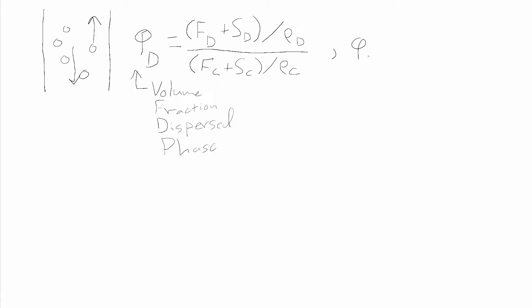We can also consider the volume fraction of the continuous phase, which is defined similarly. The way we're going to analyze the system is to look at the relative motion of the two phases. A differential element of the dispersed phase has a velocity u_d bar, and a differential element of the continuous phase has a velocity u_c bar. The relative velocities are simply the sum of u_c bar and u_d bar, with vector signs — positive moving up, negative moving down.